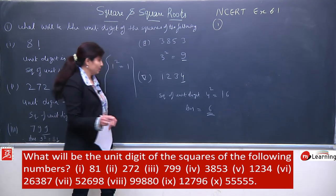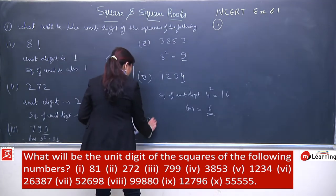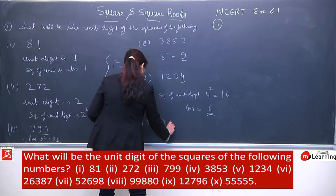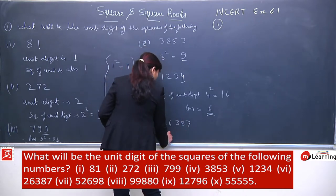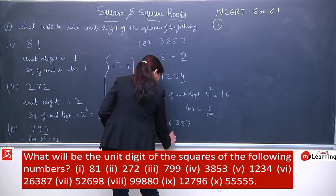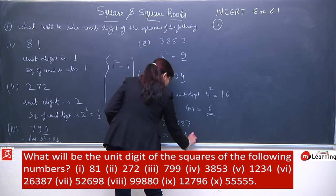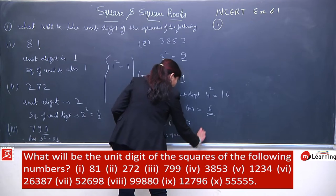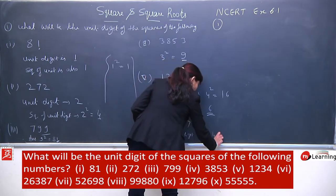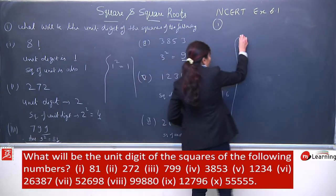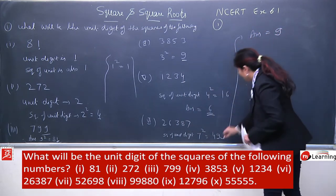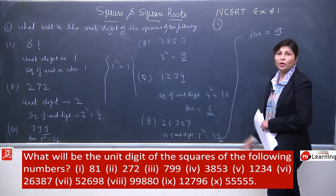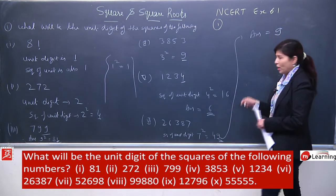Sixth number: unit digit is 7. Same pattern — square of unit digit, which is 7 squared equals 49, but your answer will be only 9. The last digit, meaning the unit digit, is what your answer should be. Seventh number: unit digit is 8. Square of 8 is 64, so your answer will be only 4. I keep stressing this point: when this number is multiplied by itself, the unit place will definitely be 4.